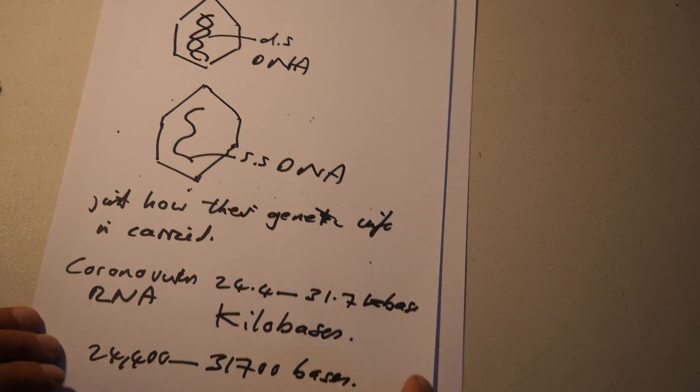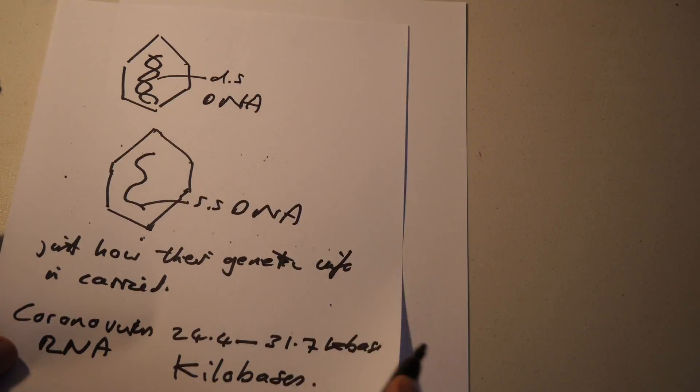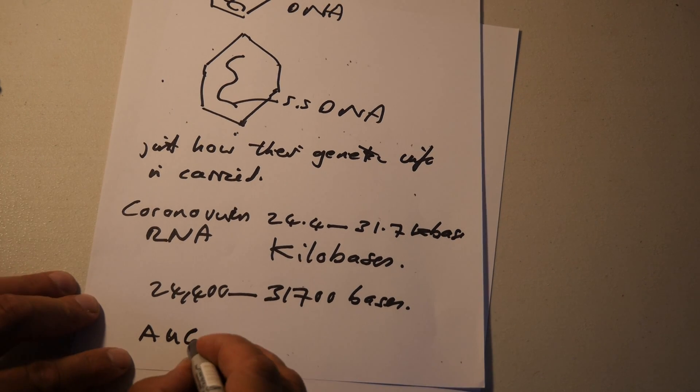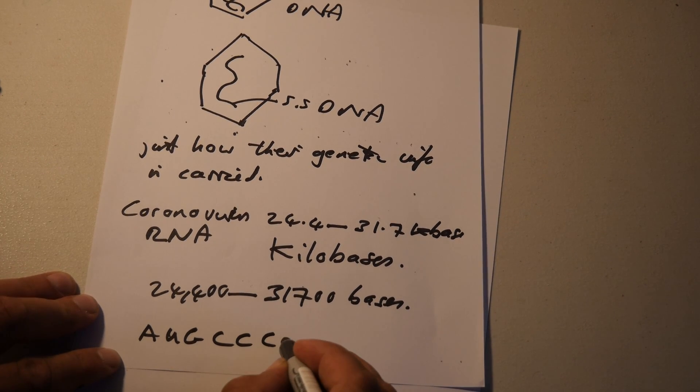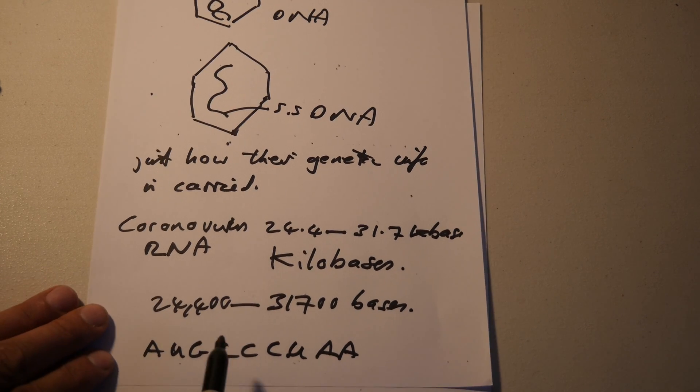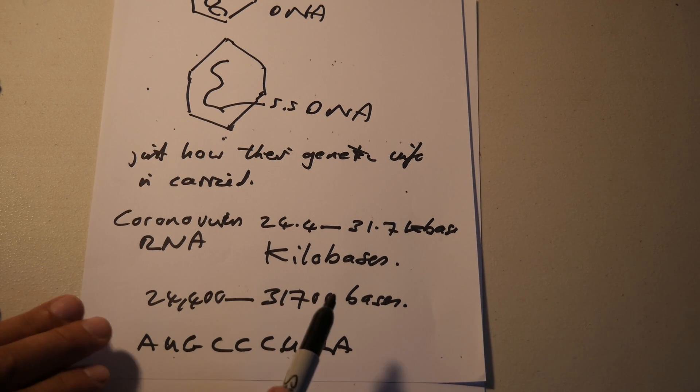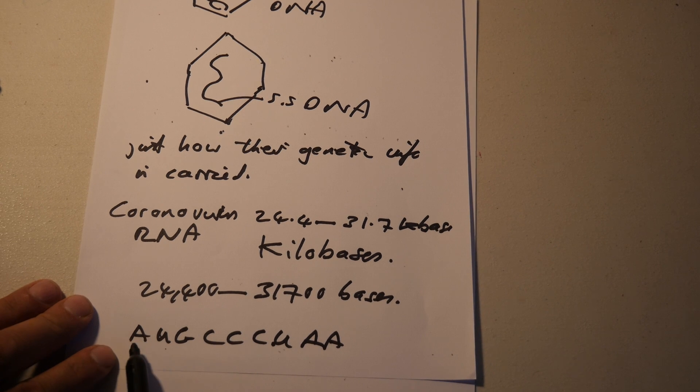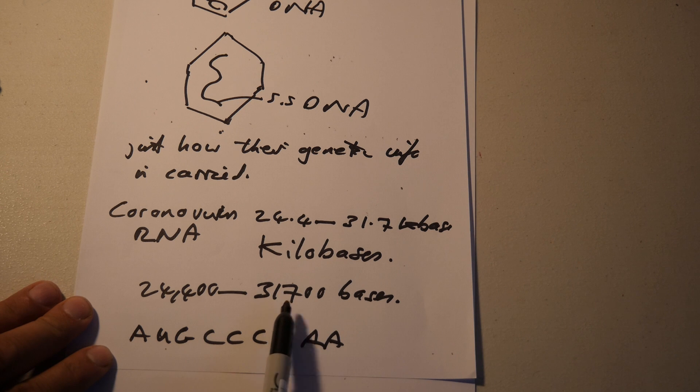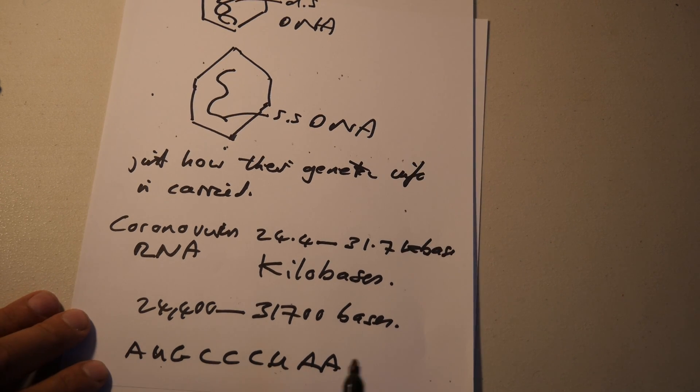There's a bit of variation. So that's how long the RNA is. And the bases are the A, the U, the G, the C. These are the bases. So it's RNA ranges from a number of bases, from 24,400 to 31,700 bases long. These are the bases. So this has got three, six, nine bases. That's nine in here.